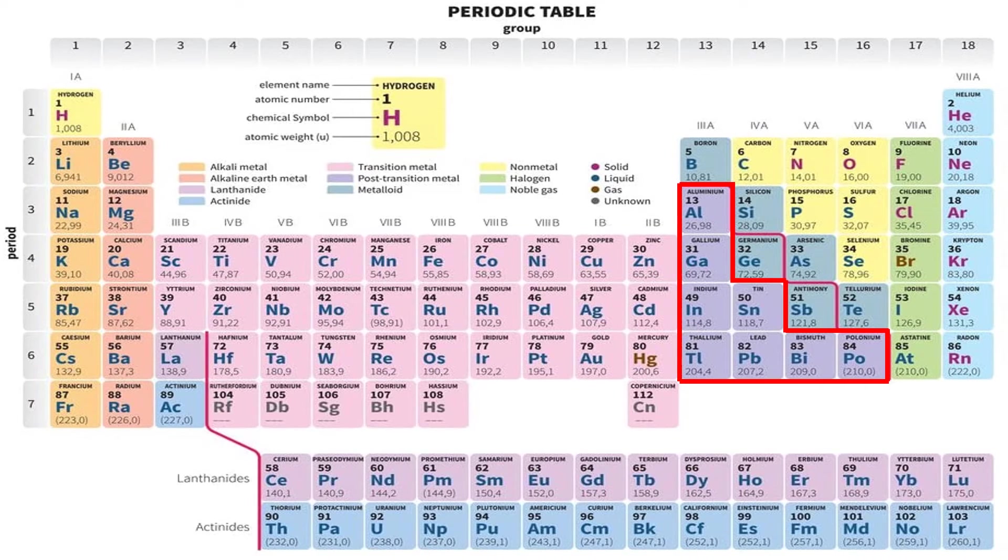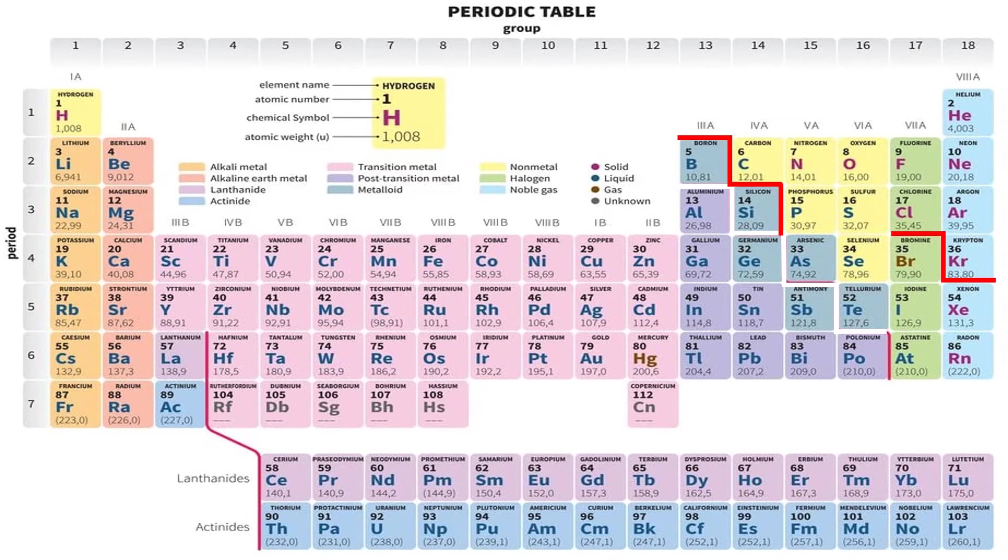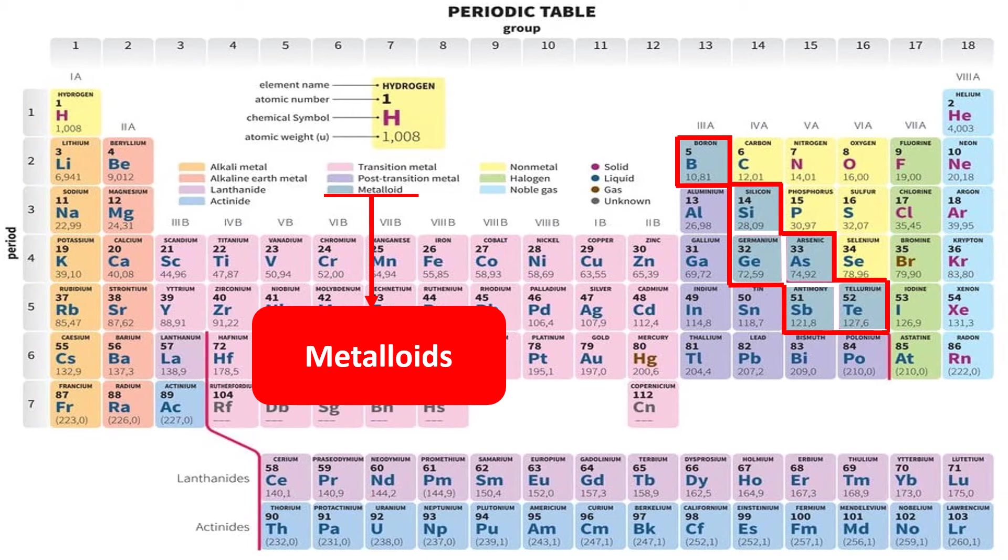Then, this group of metals are called post-transition metals. Then, this group of elements are called metalloids.